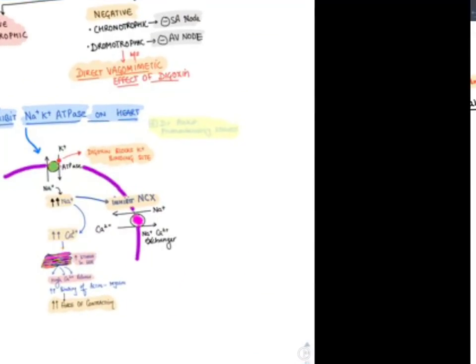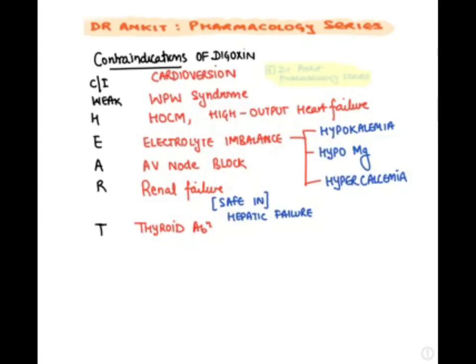Contraindications of digoxin — mnemonic is 'contraindicated in weak heart': cardioversion (can precipitate arrhythmia), WPW syndrome, hypertrophic obstructive cardiomyopathy, high output heart failure, electrolyte imbalance (low potassium/magnesium, high calcium), AV nodal blockage (can lead to complete heart block), and renal failure — digoxin is absolutely contraindicated in renal failure because it is excreted by the kidney and not metabolized by the liver, so it is safe in liver failure.